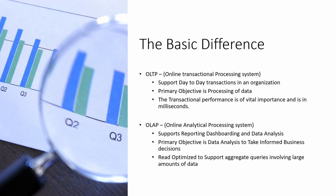OLTP, which stands for Online Transactional Processing, as the name suggests, is vital to support day-to-day transactions in an organization. The primary objective here is the processing of data, and transactional throughput is vital for OLTP systems. If you are asked about the difference between these two systems, your prime focus should be on explaining the different purposes these databases serve — everything else comes secondary.